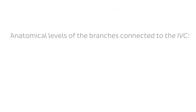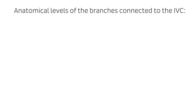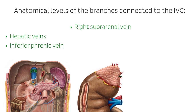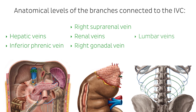Let's now review the specific anatomical levels of the branches connected to the IVC. They are the hepatic veins, seen now highlighted in green on this image, and the inferior phrenic vein, the right suprarenal vein, seen here highlighted, the renal veins, and the right gonadal vein. The lumbar veins, which we can now see highlighted in green from a posterior view, and the common iliac veins.